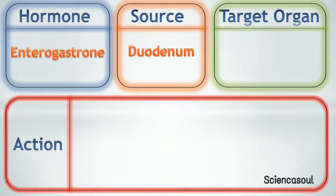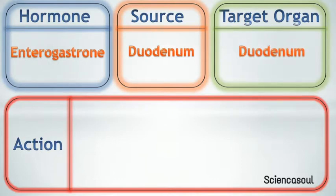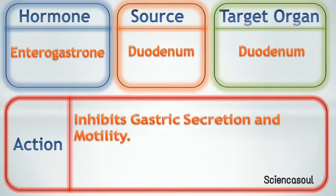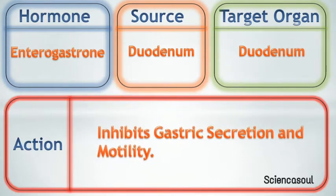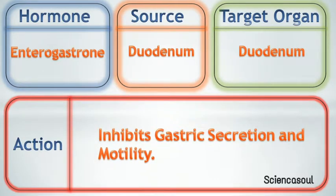Second hormone is enterogastrone. Source of enterogastrone is the duodenum. Target organ of enterogastrone is the stomach, and the action of enterogastrone is to inhibit gastric secretion and motility.